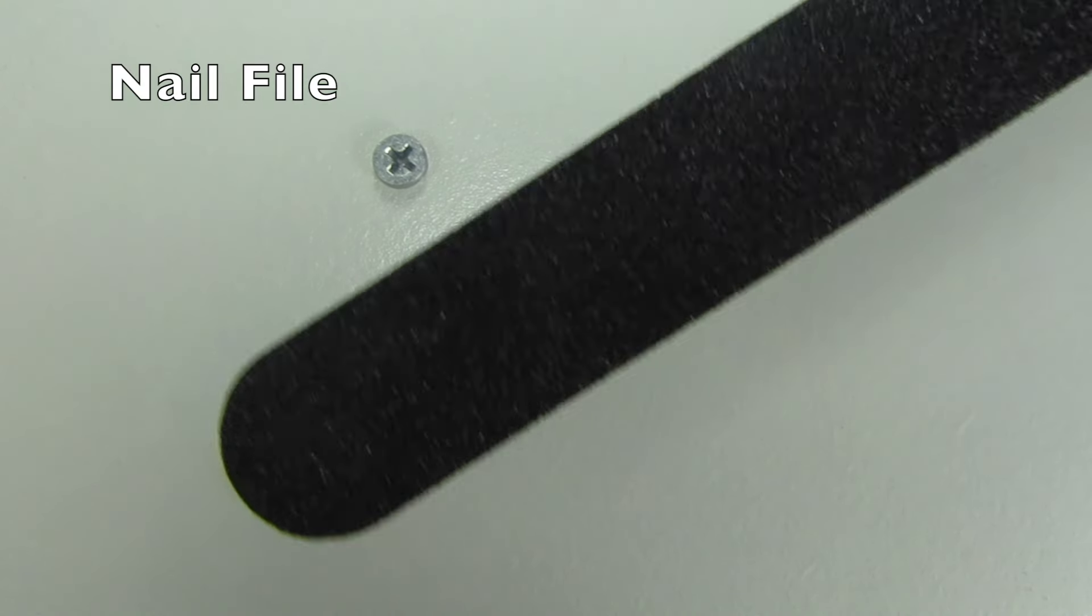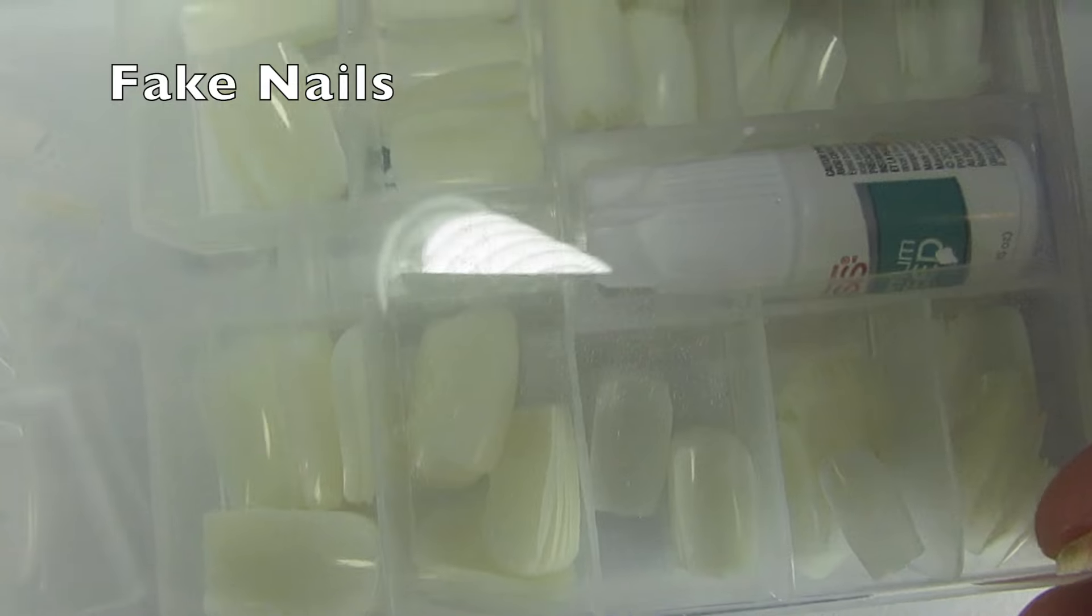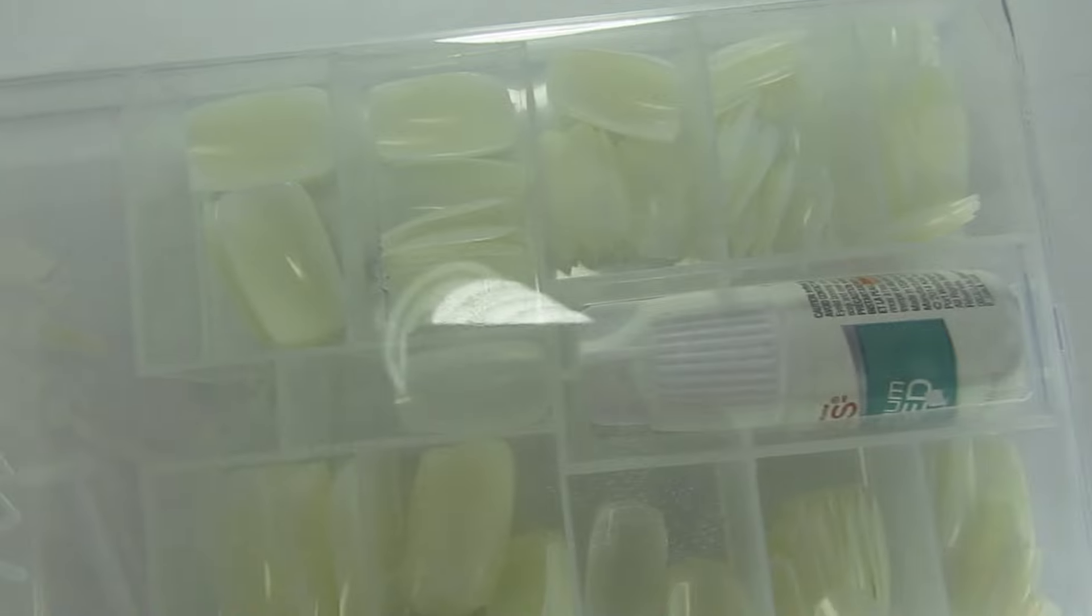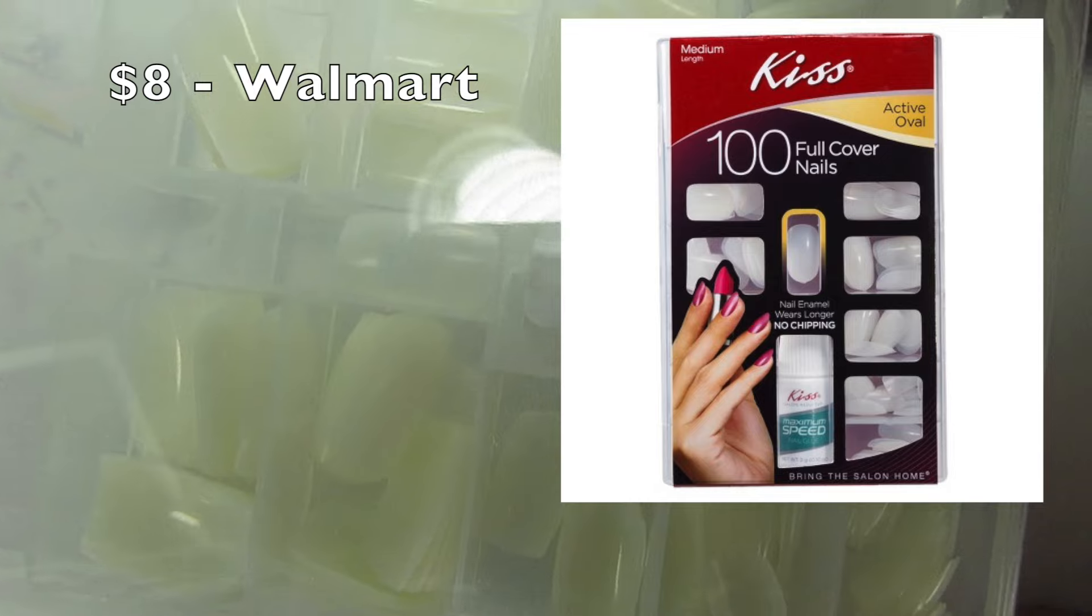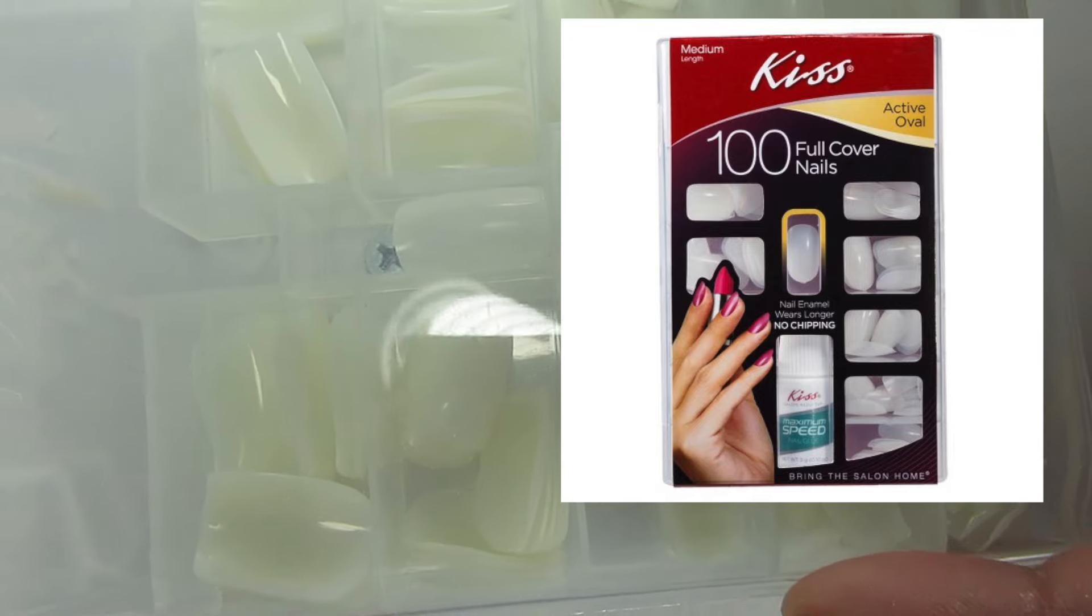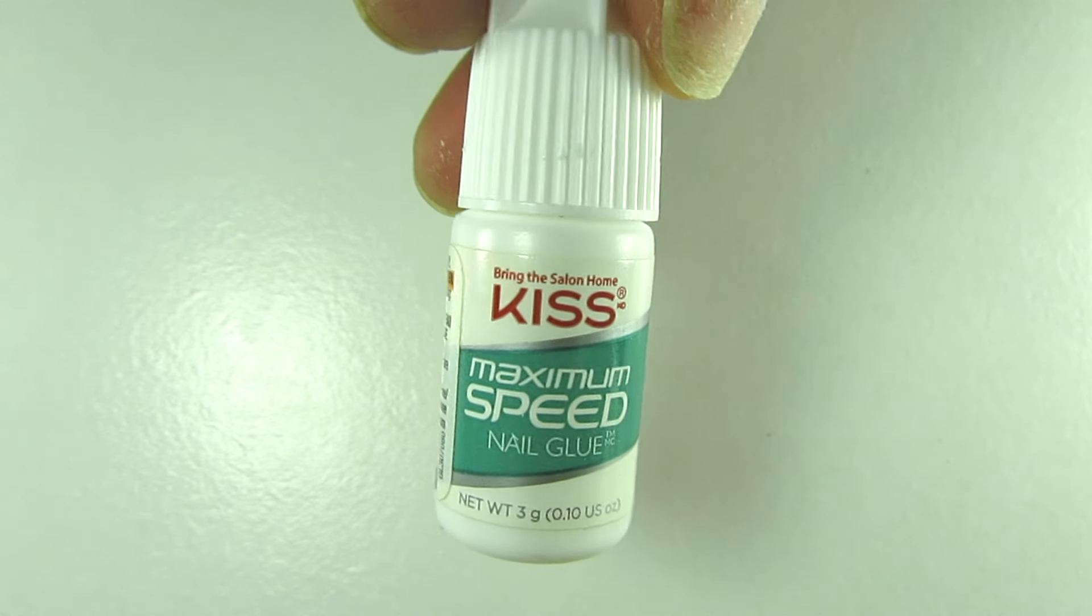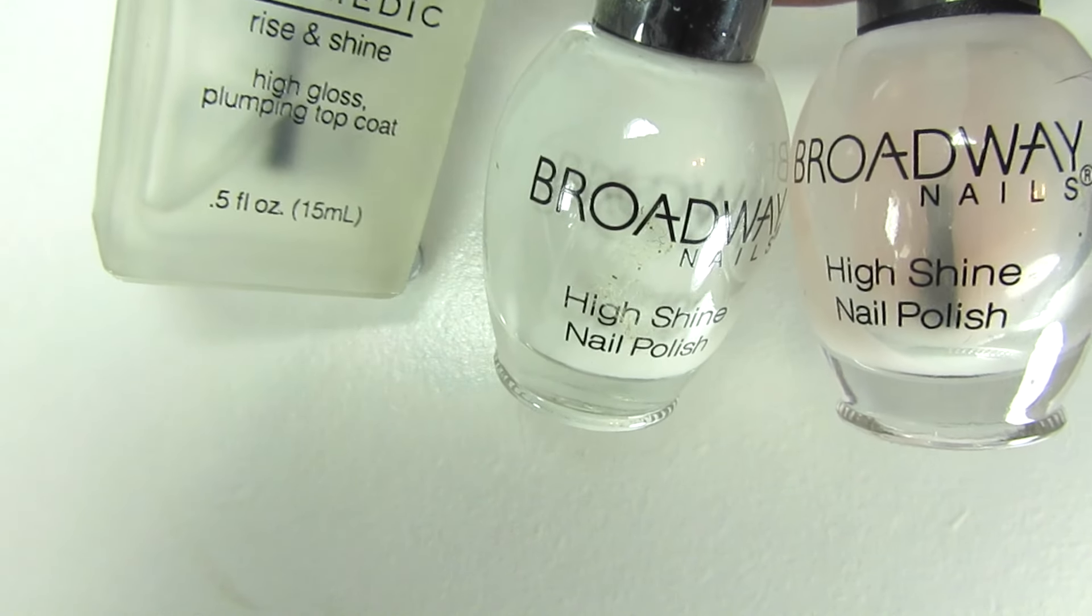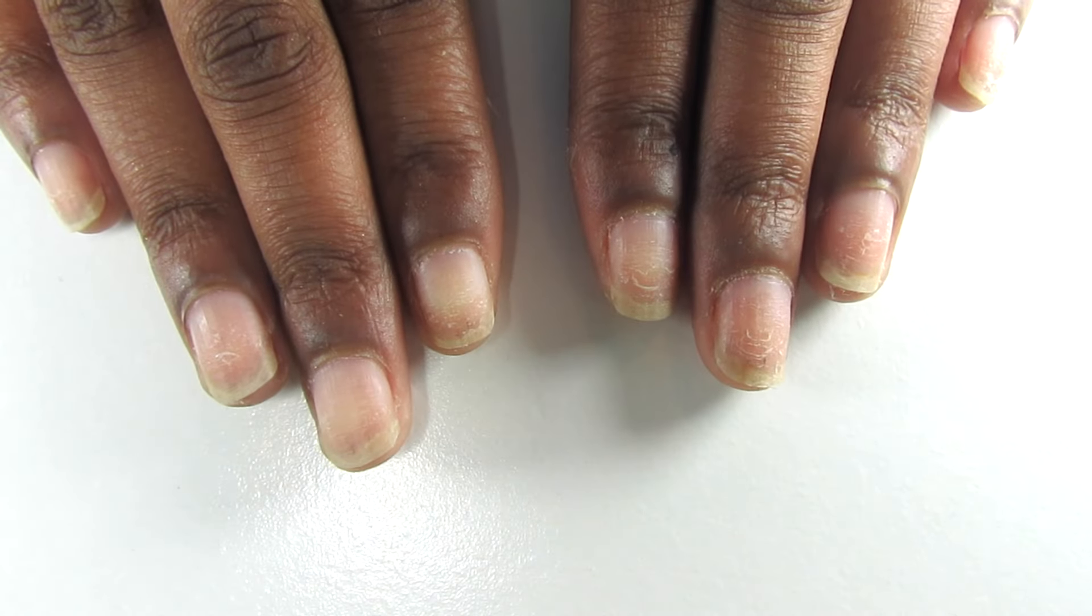You'll need an emery board medium to coarse grit, a nail clipper, some nails, and I try to include a picture of the actual package so you guys can see which ones to get. This isn't the exact package but this is very similar to the ones I got. This kit also came with nail glue which you will need, a nail polish color of your choice, a base coat and a top coat.